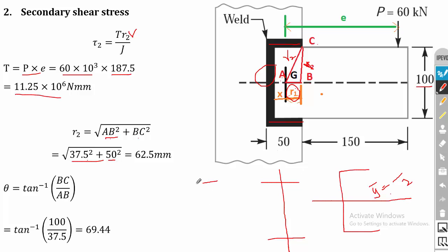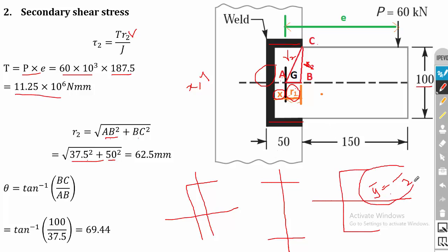Note: if your weld region is an L-section, it is not symmetric about either axis, so you must calculate both X-bar and Y-bar. In this problem we calculated only X-bar because the C section is symmetric about the x-axis, so Y-bar = D/2 directly. For an L section, both X-bar and Y-bar must be calculated separately.